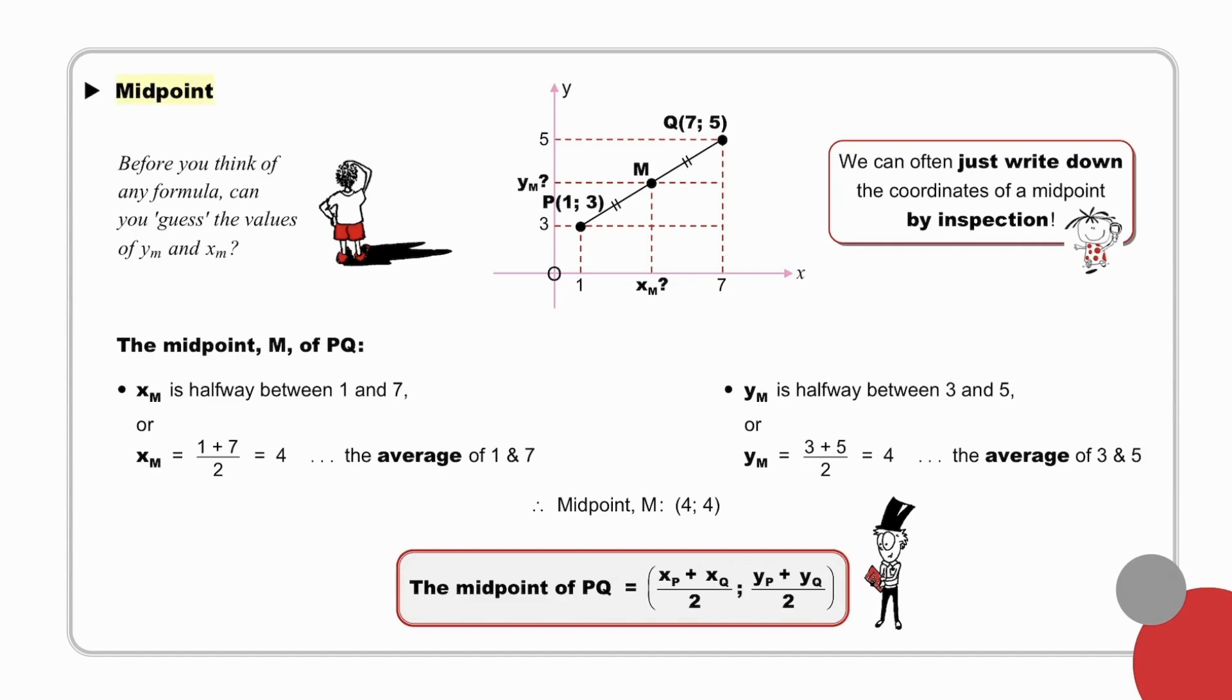We note, however, that the midpoint M of PQ has an X coordinate which is halfway between 1 and 7, but it is also (1 + 7)/2, the average of 1 and 7. And similarly, the Y coordinate of the midpoint is halfway between 3 and 5, but it is also (3 + 5)/2, which is the average of 3 and 5. Confirming yet again the formula for our midpoint as being (x_P + x_Q)/2, (y_P + y_Q)/2. Knowing that the coordinates of the midpoint are the averages will ensure that you remember the plus signs, but whenever possible, just write the coordinates down by inspection.